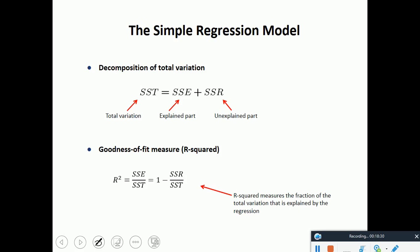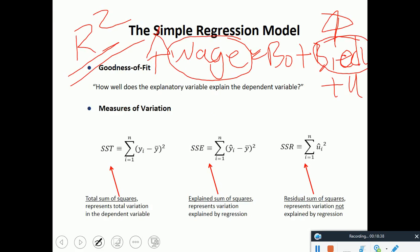Sum of square residual is u-hat squared. U-hat is the predicted error term. The explained part is (y-hat − y-bar), which the regression can explain. The u-hat is the error term — the regression cannot explain it, so that's the unexplained part.